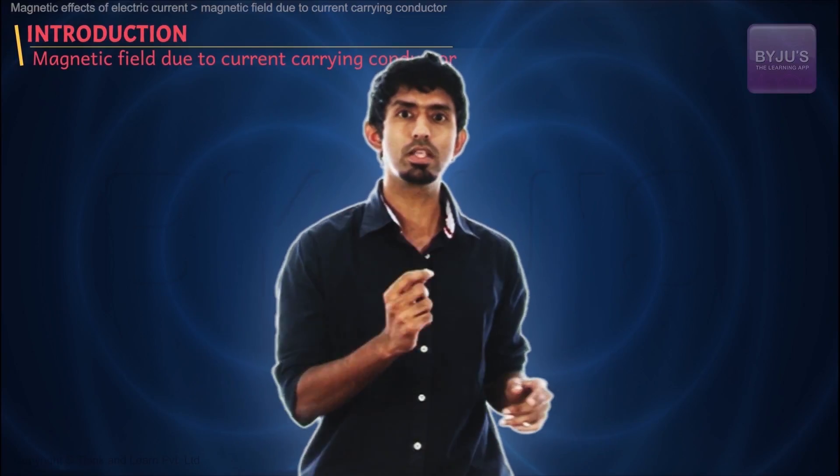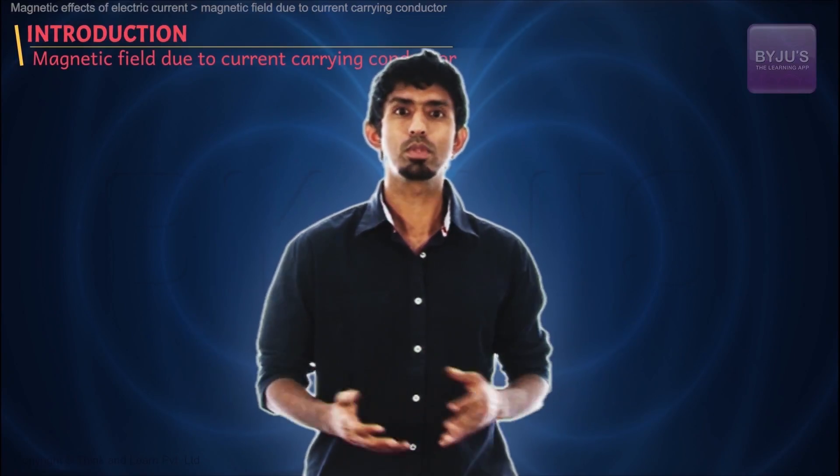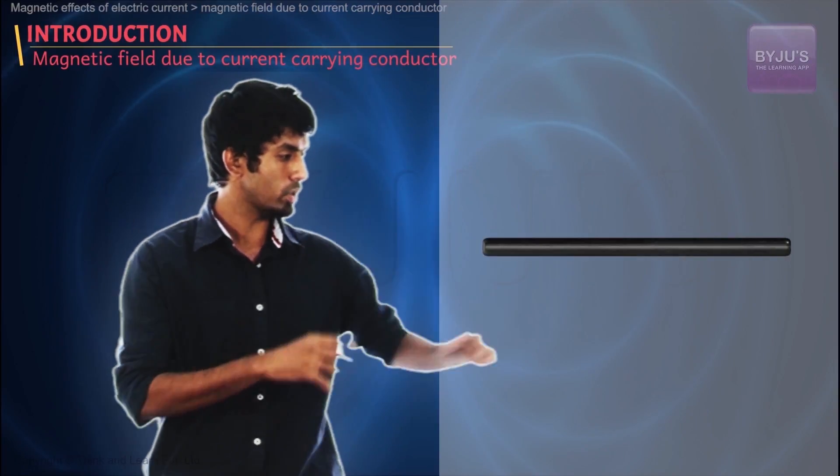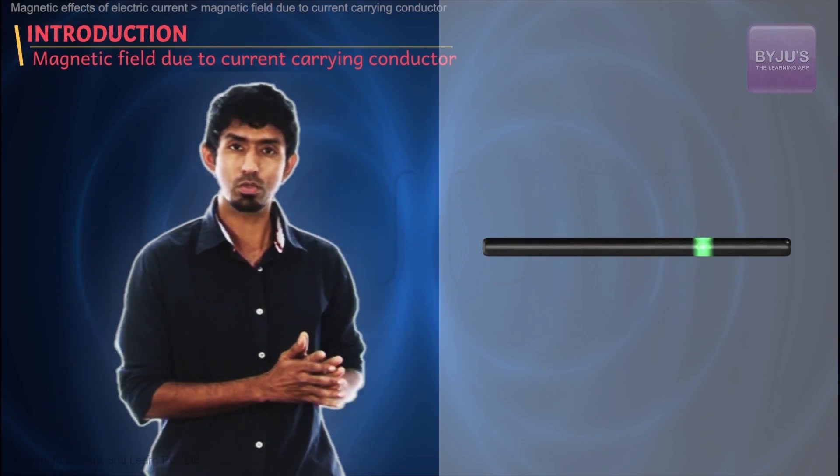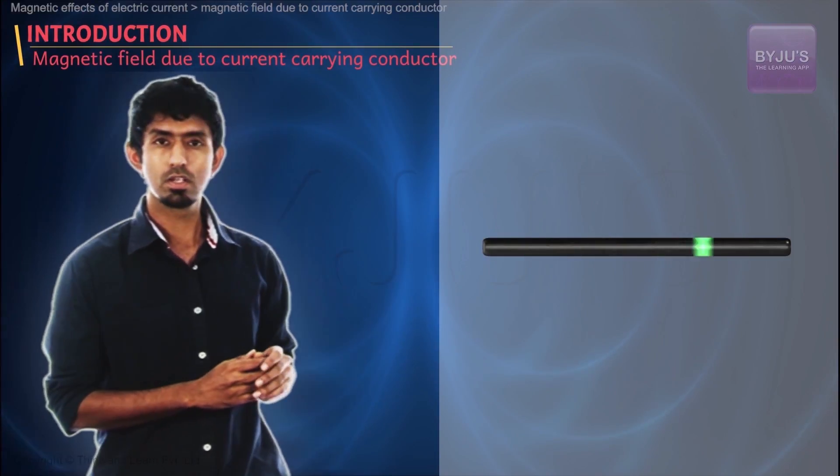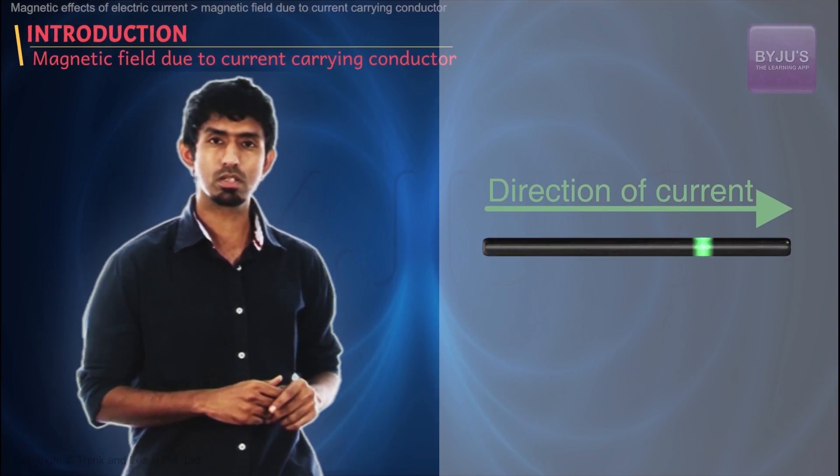So what do you see now? A current carrying conductor behaves very similarly to a magnet. So let's start playing with it even more. Let us take a current carrying wire and say that there are some charges going through it. We all know that they're going in some direction.